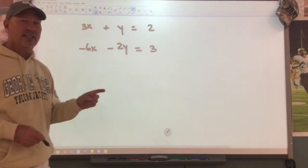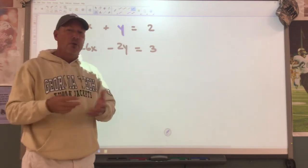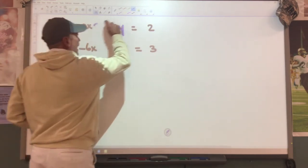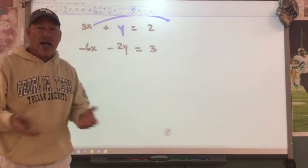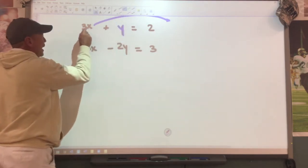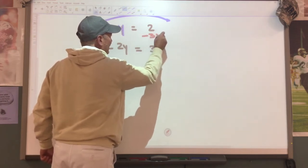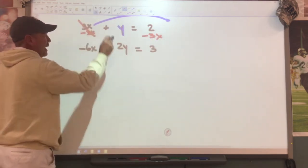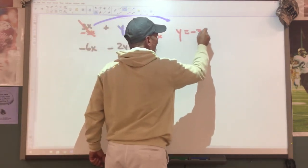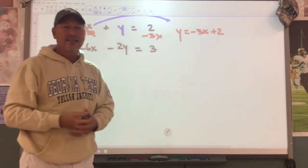In this case, I would look at the top equation and I would say the y - it wouldn't be hard to get the y by itself. If I move the 3x to the other side, y would be by itself. So we're going to say minus 3x minus 3x. This will cancel, and that will leave me with y equals negative 3x plus 2. Y is now by itself.